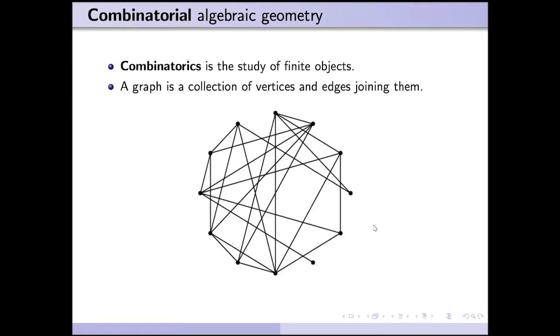Combinatorics is the study of finite objects, for example, graphs. A graph is a collection of vertices, which you can think of as points in the plane, and edges joining pairs of them, which you can think of as lines between certain of the vertices. So here I have a picture of a graph.